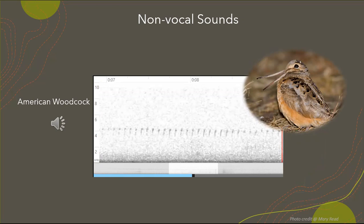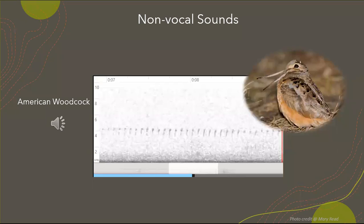Another example of non-vocal sound production is through feathers. The American woodcock, during its courtship display, flies and spirals in the air making a tweeting sound with its wings — specifically with its three narrow outer primaries. As it spirals up, wind passes through those feathers and produces this tweeting sound. I'll play it now — fair warning, this is one of the lower-quality recordings in this presentation, so turn your volume up.